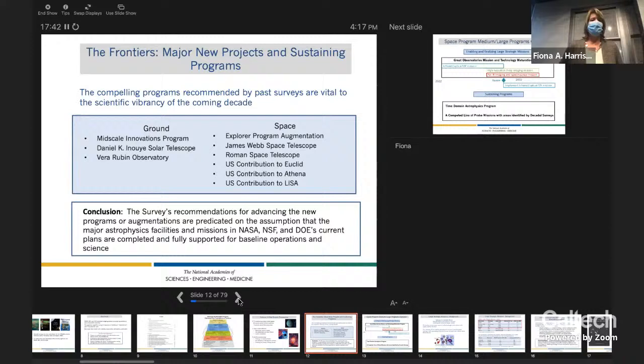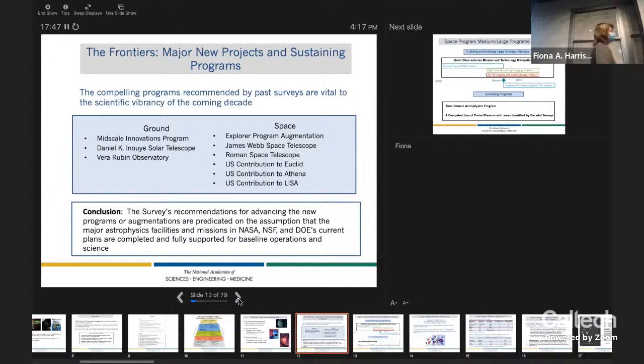And so these priority areas are pathways to habitable worlds, new windows on the dynamic universe, and unveiling the drivers of galaxy growth. What I'm going to do for the next 25, 30 minutes, hopefully then leaving a lot of time for discussion is to try to go through starting with the medium and large size projects and tell you how we approach these and what the challenges we faced were in trying to put together a program.